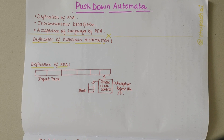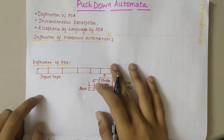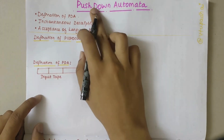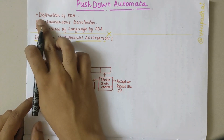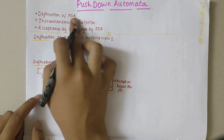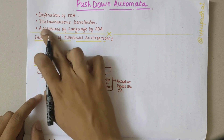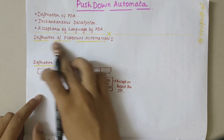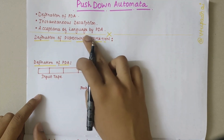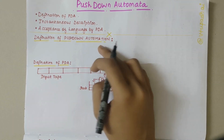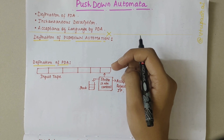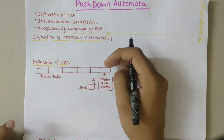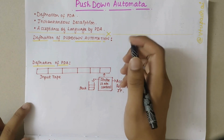In this video we'll be looking into the pushdown automata module. We'll be starting this module and we'll understand the definition of PDA, instantaneous description, and acceptance of language by PDA.